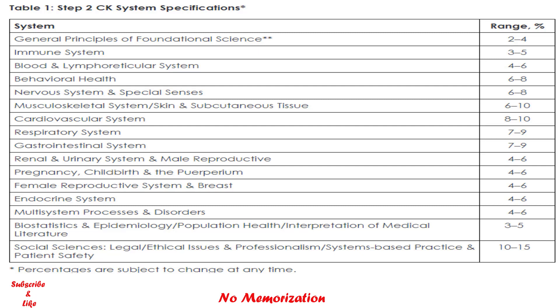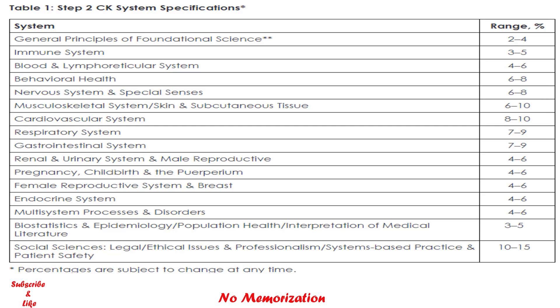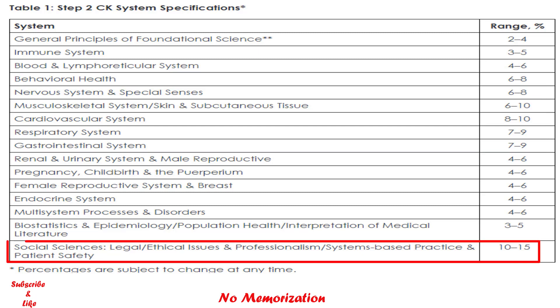The highest percentage of questions are from systems such as nervous, musculoskeletal, cardiovascular, respiratory, and GI. The top percentage of questions also comes from social sciences — that means legal or ethical issues. If combined with behavioral health, it would be around 16 to 23 percent of the total content.